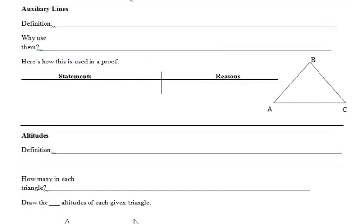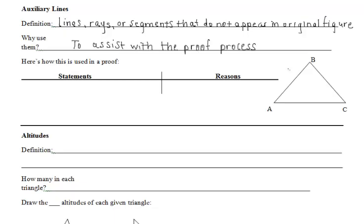Let's talk about an auxiliary line. The definition of this would be lines, rays, or segments that do not appear in the original figure. Why do we use them? We use it in order to make the proof process easier or to assist with the proof process.